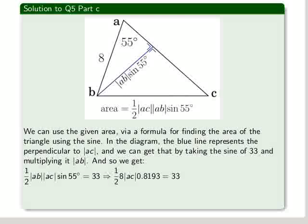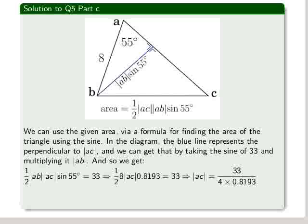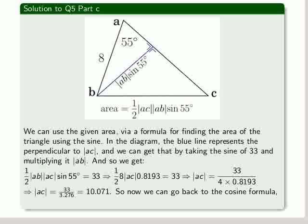So we just plug in values for that and we get AC equals 33 divided by 4 times 0.8193. So that means that AC is equal to 33 over 3.276, which is 10.071. So now we have AC.